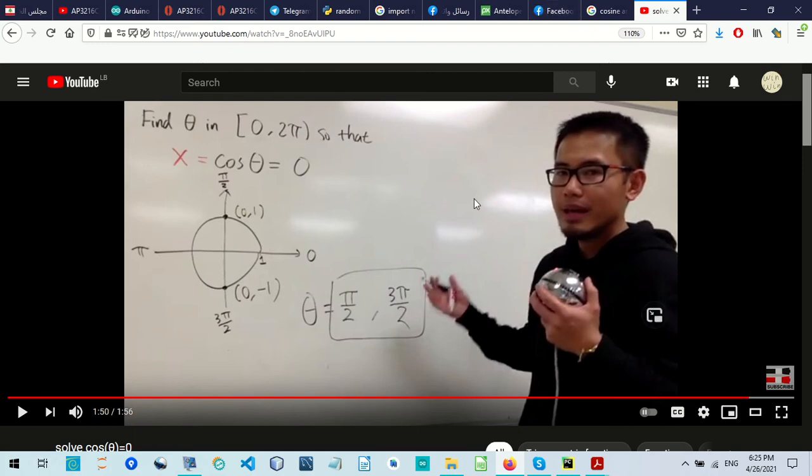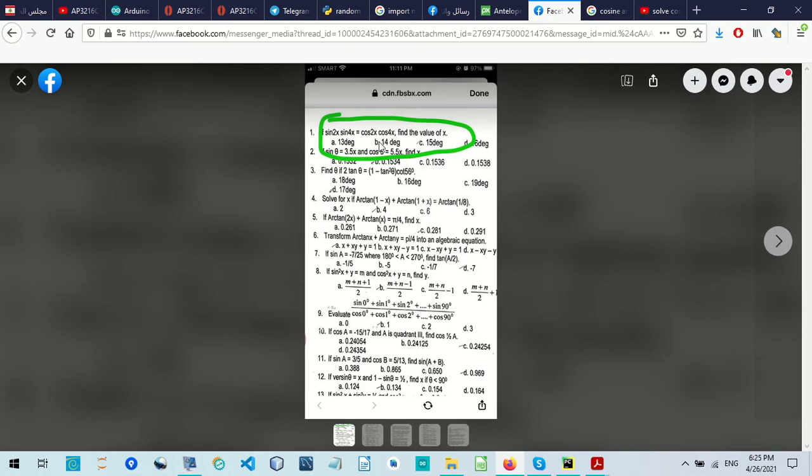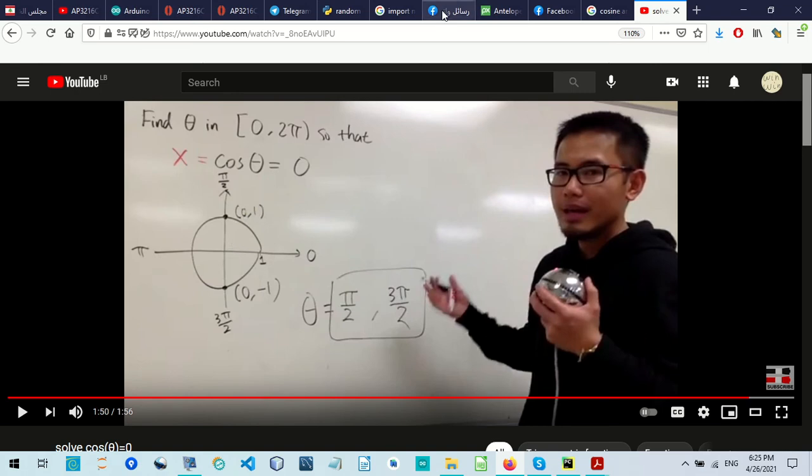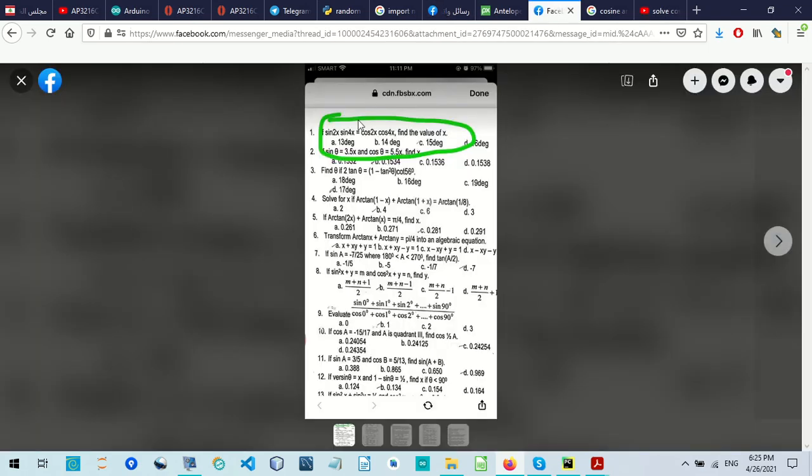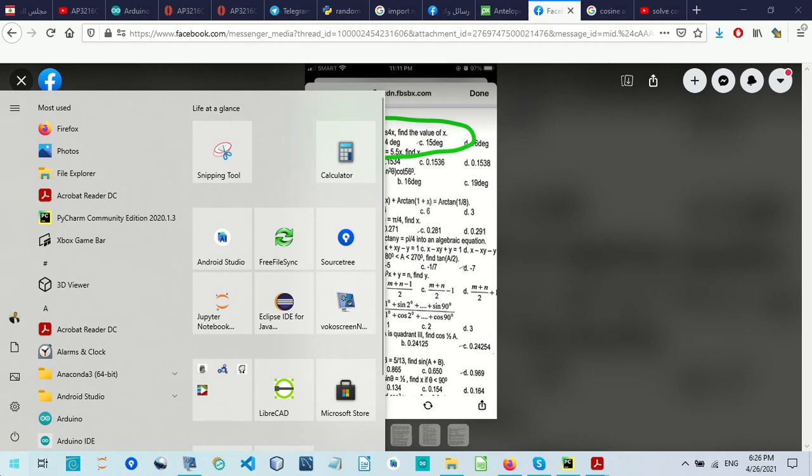The easiest is 6x equals 90 degrees, so x equals 90 divided by 6. 90 divided by 6—let's open the calculator.